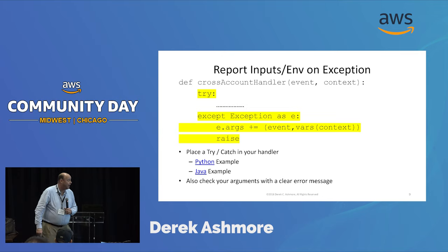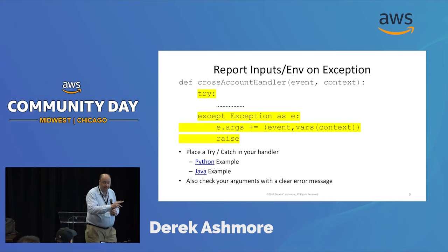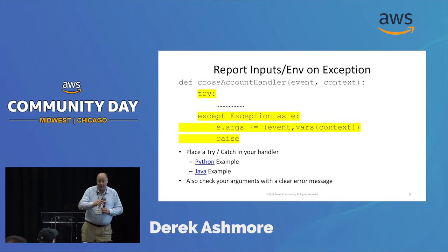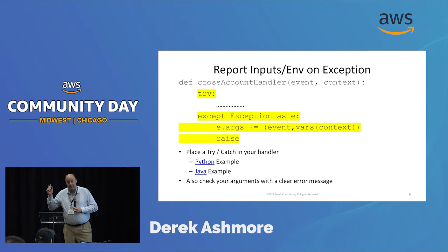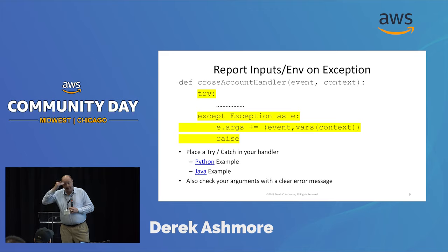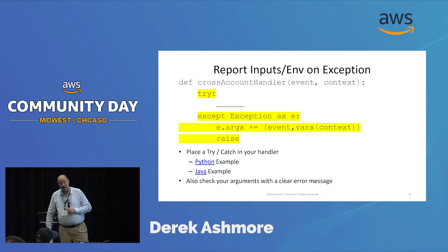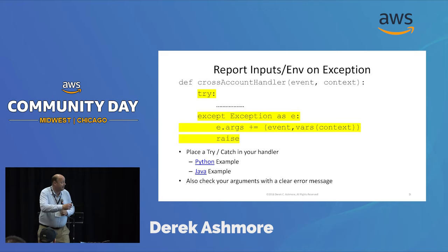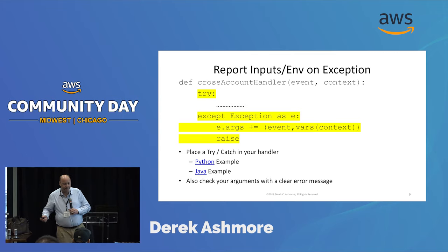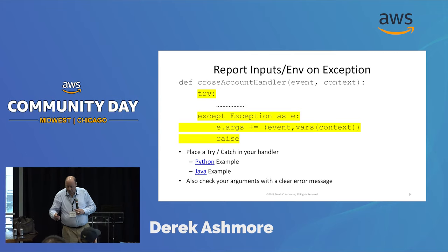Notice that I re-raise the exception. If I've caught the exception but don't re-raise it, the lambda runtime engine doesn't know about it. AWS doesn't know it's an error — it's effectively swallowing the exception.